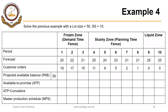In this segment, we will solve the same example where we had a lot size of 50, but here we have a safety stock of 10 as well. So here we will have an MPS whenever the projected available balance falls below the safety stock value, that is 10.